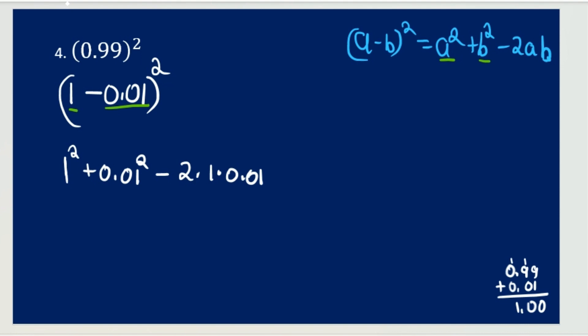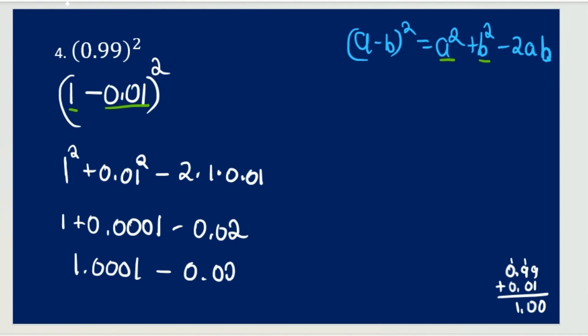So it's going to be 1 squared plus 0.01 squared minus 2 times 1 times 0.01. Let's just solve: 1 squared is just going to be 1, then plus 0.01 squared is just going to be 0.0001. Then 2 times 1 times 0.01 is just going to be 0.02. Using order of operations, going left to right, we first add 1 plus 0.0001, which equals 1.0001, minus 0.02. When we subtract, we get 0.9801. That is going to be our answer.